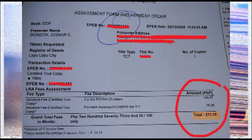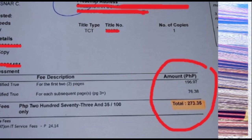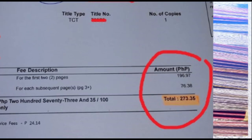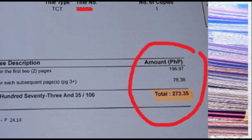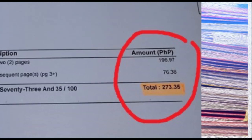After submission, you will be given a printed statement on the amount you need to pay. Proceed to the cashier and pay. You will be given a receipt with information regarding the description of the property and owner's details. Read carefully and check if there are any typographical errors or mistakes in it.